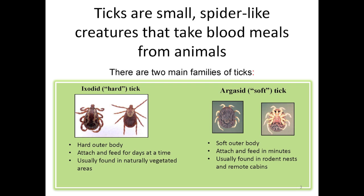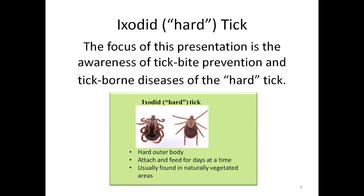Soft ticks have a soft outer body and when they attach to a host, they feed quickly, in minutes. Soft ticks are usually found in rodent nests and when rodents build nests in rustic cabins. The focus of this presentation will be tick bite prevention of bites from Ixodid, or hard, ticks.